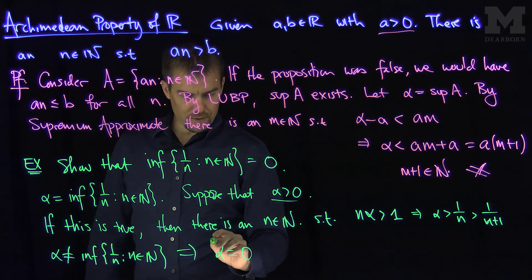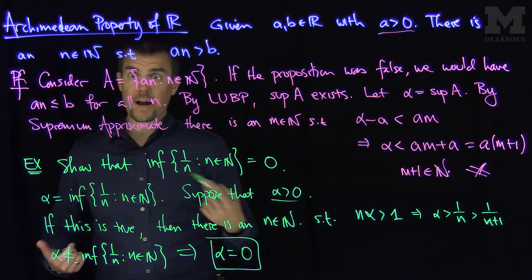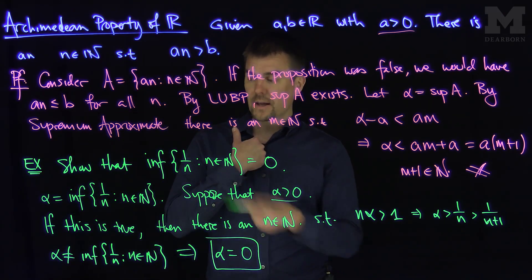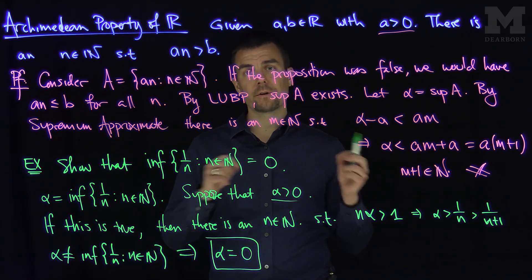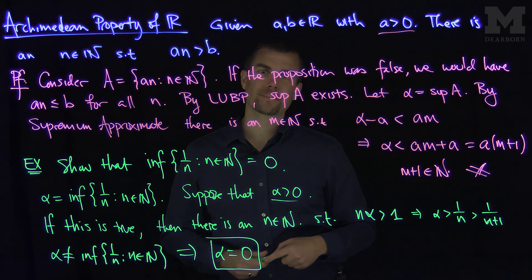So the infimum of this set is equal to zero, as we know. So the Archimedean property gives us a way of efficiently finding infimums and supremums of sets. Thank you very much.